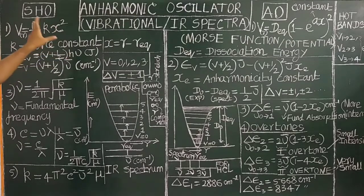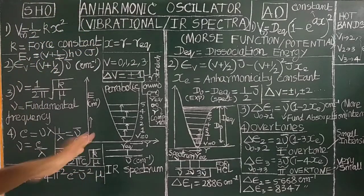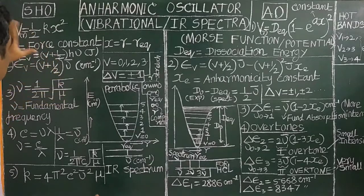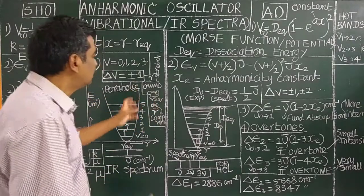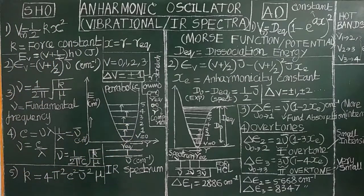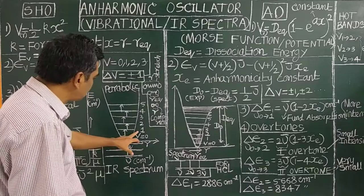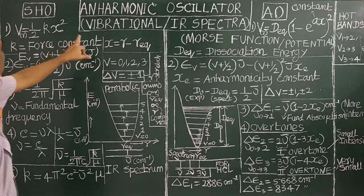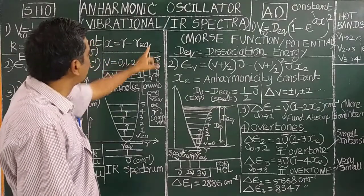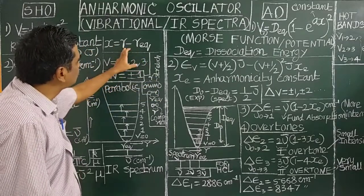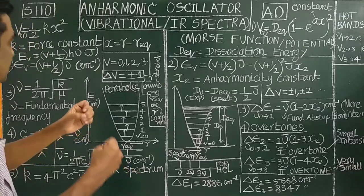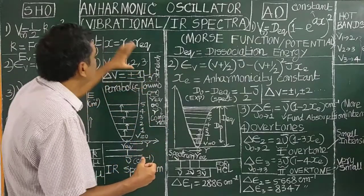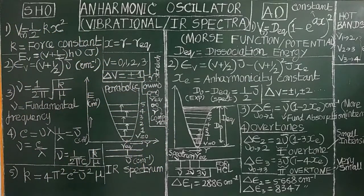This is the potential energy expression for simple harmonic oscillation. Real molecules are not elastic; the stretching and compression are not elastic. V is the vibrational quantum number. k is called the force constant. X here is R minus R-equilibrium — that is, how much distance away from the equilibrium position.